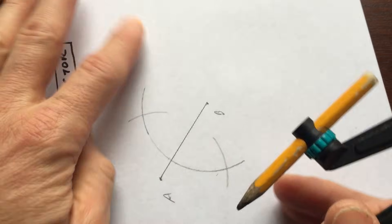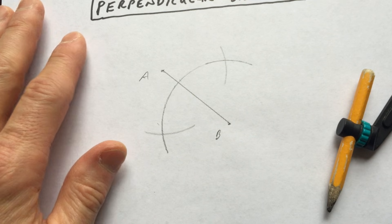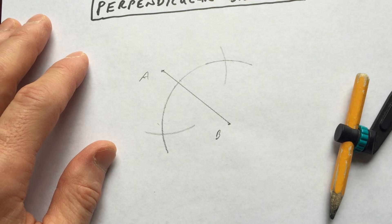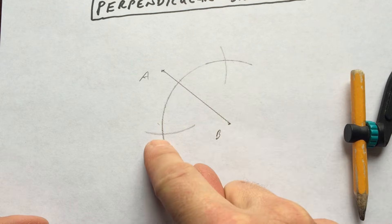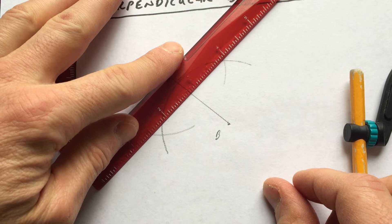And then what you're going to use, you're going to use those two points to draw a line. So those two points of intersection right here and right here, and that's going to be your perpendicular bisector.